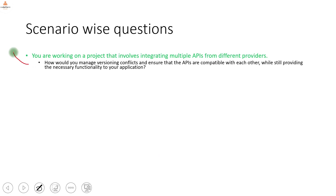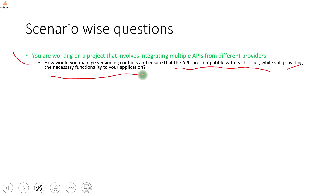You are working on a project integrating multiple APIs from different providers. How do you manage versioning conflicts and ensure the APIs are compatible while providing necessary functionality? For each provider you maintain different versions and documentation, and create a runbook for each one. You must go through the API specifications of each provider. There is no other way to avoid ambiguity around multiple versions.